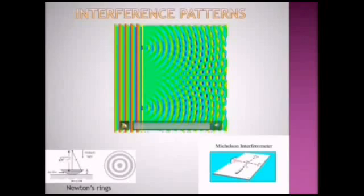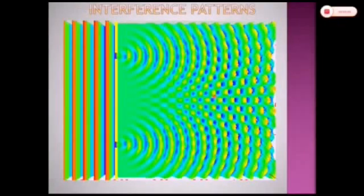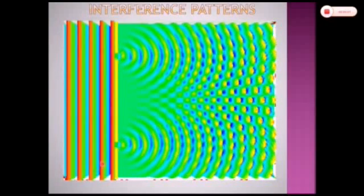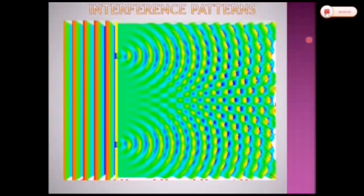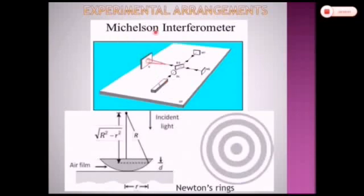Here we observe interference patterns. There are different types of experimental setups to view or observe interference fringes. This is the Michelson interferometer. Newton's rings are also examples of interference fringes, with a different experimental arrangement. These are different arrangements used by different scientists. This is a magnified view of the interference pattern and the experimental setup to observe it.